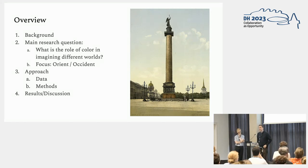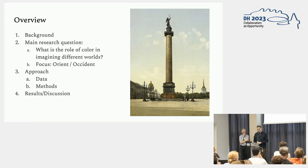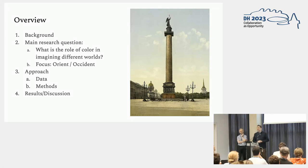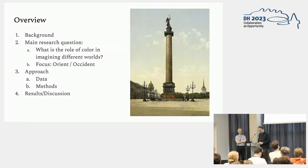In the next 20 minutes, we will first give you some background on our research question. Then we will discuss the main research question: what role does color play in imagining different kinds of worlds? We will specifically focus on two kinds of worlds which are directly connected to each other — the Orient and the Occident.